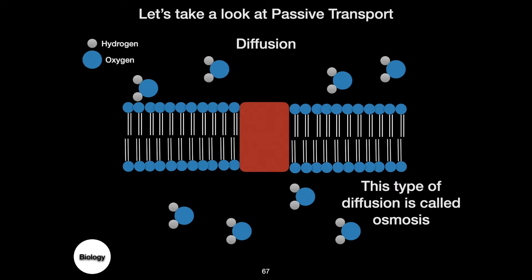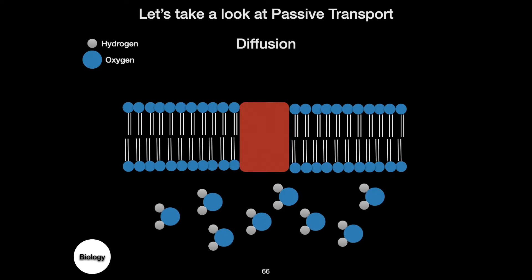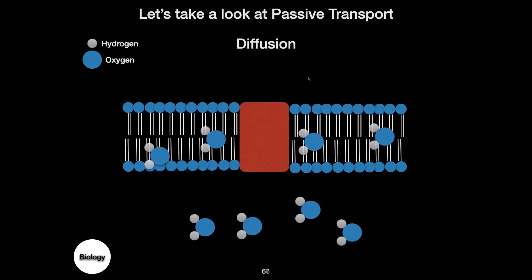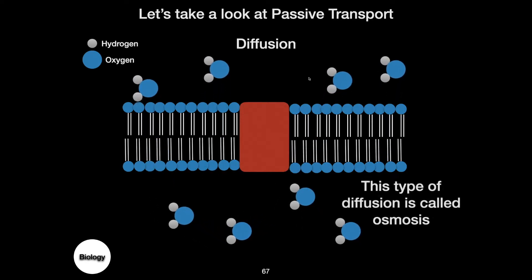Let's back that up and take another look. Notice again we have an area of high concentration of water molecules and an area of low concentration. As we go through the animation again, you will notice that the molecules move through the phospholipid bilayer, not through the integral protein. Again, this is called osmosis.